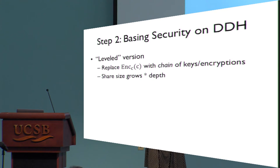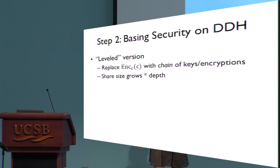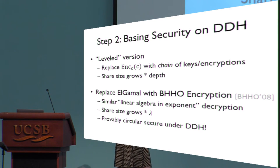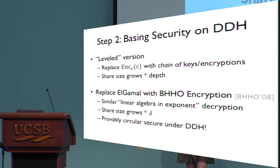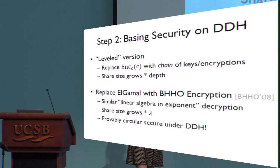The final step is removing the circular security assumption, with two potential approaches. The first is a leveled approach typical in FHE: instead of encrypting the secret key under itself, use a sequence where each key is encrypted under the next. This blows up the share size by the depth of computation, needing a new key for each multiplication. However, unlike FHE, in our construction we can get rid of circular security altogether by using the Boneh-Halevi-Hamburg-Ostrovsky encryption scheme, which is provably circular secure exactly in the way we need, based on standard DDH.